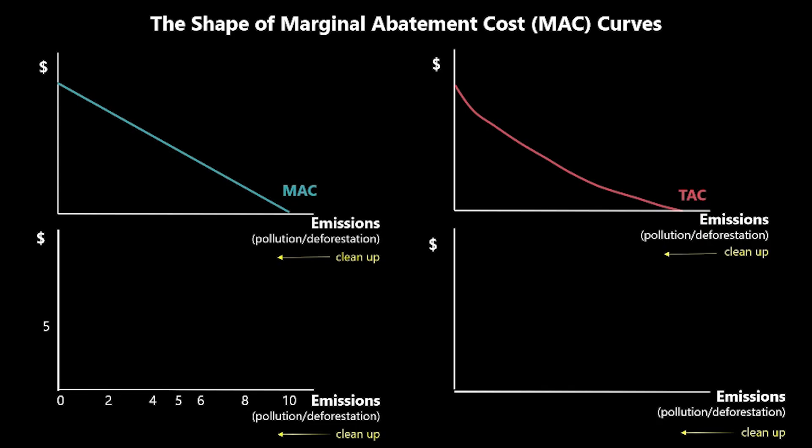This video is about the shape of marginal abatement cost curves. In previous videos I've explained why we assume that marginal abatement costs are declining with emissions, and also the shape of the total abatement cost curve linked to that. What I'd like to explain here is a couple of other options for the shape of these curves.